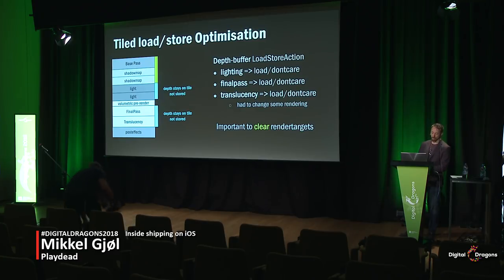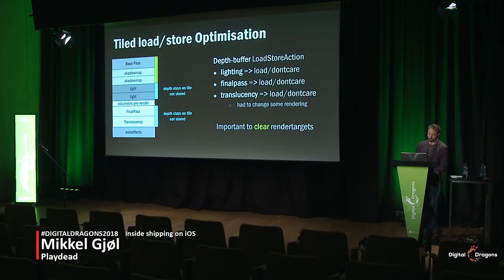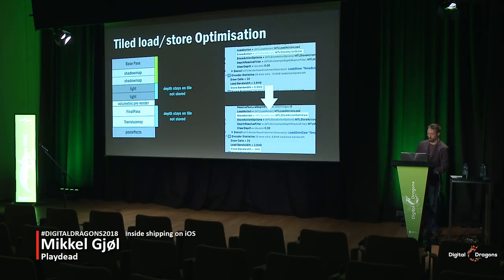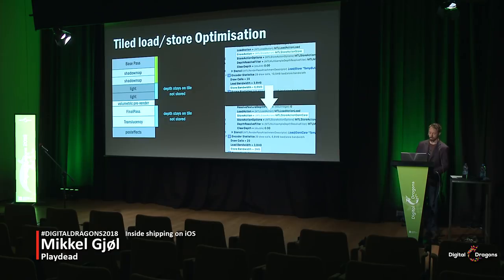The base pass generates our depth buffer, and the light pass renders lights and checks against that depth buffer. Since it doesn't actually modify the depth buffer — it just reads the data, checks light geometry against it, and writes to the lighting buffer — there's no need to write the depth buffer out again, which it would do by default. The same goes for the final pass and translucency pass: they all just read from the depth buffer for depth comparison but don't modify it, so again no need to write it out. You can check all these things in Xcode — it has stats so you can go through all your render passes and see whether the loads and stores are doing what you expect.